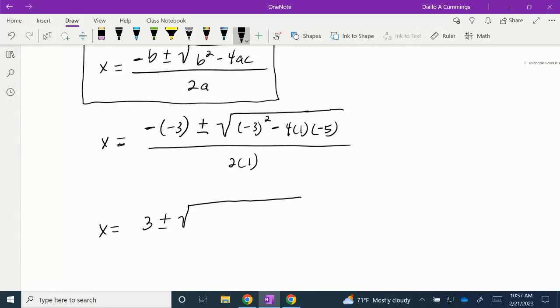So we want to simplify inside of our radical. Here again, we're going to apply the order of operations. We're going to evaluate our exponent first, so (-3)² is a positive 9.